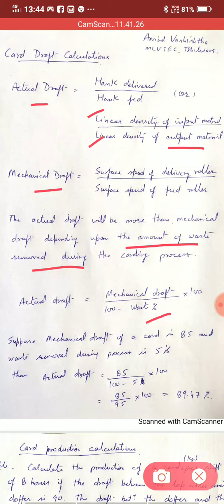We can take an example. Suppose mechanical draft of a card is 85 and waste removal during process is 5 percent. Then actual draft will be 85 divided by 100 minus 5 multiplied by 100. And it comes 89.47 percent.